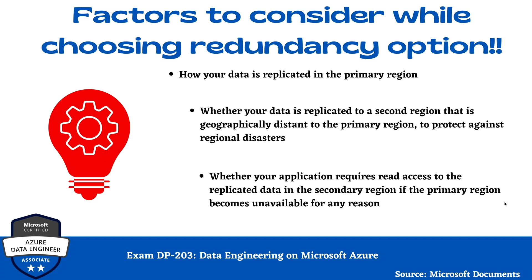The very first factor is how your data is replicated in the primary region. The second one is whether your data is replicated to a second region that is geographically distant from the primary region to protect against regional disasters. And lastly, whether your application requires read access to the replicated data in the secondary region if the primary region becomes unavailable for any reason.